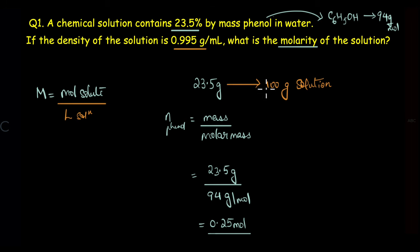Now density equals mass by volume, so volume will be mass by density. Mass of the solution is 100 grams and density is given as 0.995 g/mL. On solving this we get 100.5 mL, which is 100.5 × 10^-3 liter, because we are looking at volume of the solution in liters.